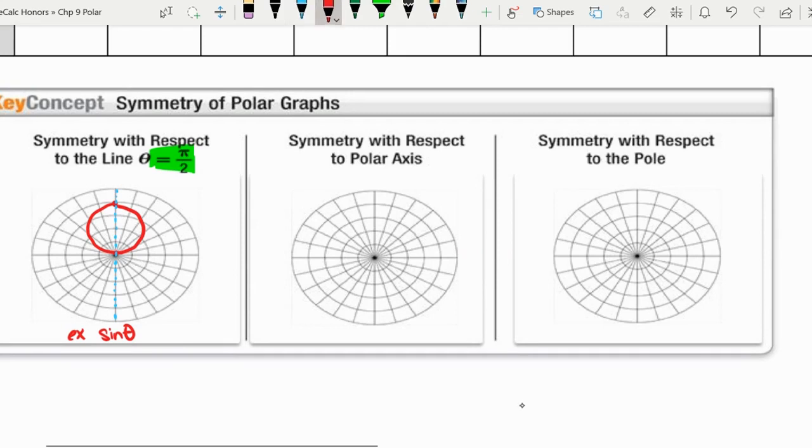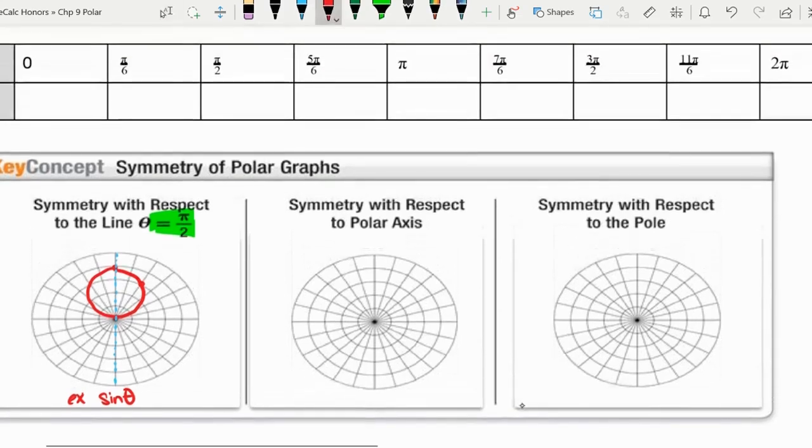We don't call it y-axis symmetry anymore, because we technically don't have a y-axis, but there's our line theta equals pi over two. You can kind of check for this symmetry, but we'll say that if this graph has the point r theta on it, then it also has a point, and here's where the tricky part comes into play.